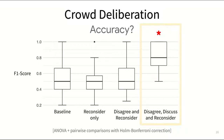I've convinced you that using deliberation in a clever way can help with labeling ambiguous data by exposing reasons why some cases are ambiguous and lead to disagreement, and also by improving answer quality.